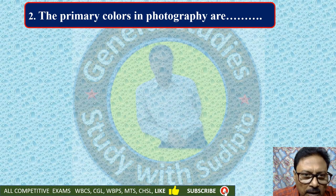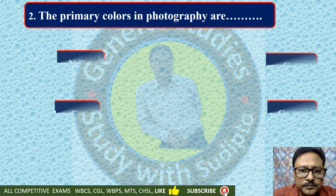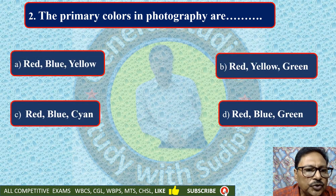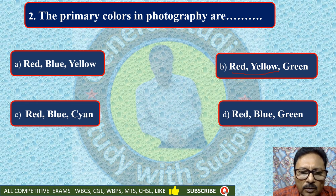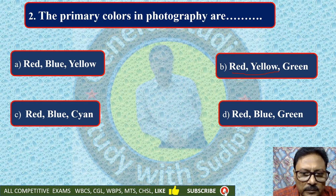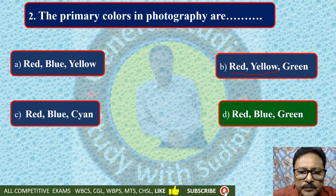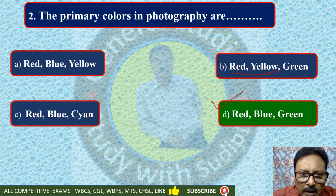The primary colours in photography are — red, blue, yellow; red, yellow, green; red, blue, cyan; or red, blue, green. The three colours combine to form different colours. Which are the basic three colours? The basic three colours are red, blue and green. This is the correct answer. The primary colours in photography are red, blue and green.